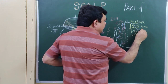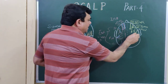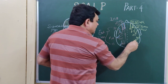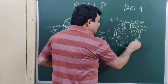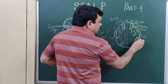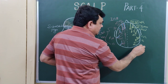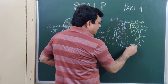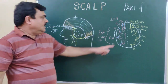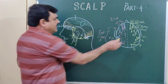The zygomaticotemporal is a branch of the maxillary division of the trigeminal nerve, and the auriculotemporal is a branch of the mandibular division of the trigeminal nerve. On the posterior side: the great auricular nerve, lesser occipital (C2), greater occipital (C2), and third occipital (C3).